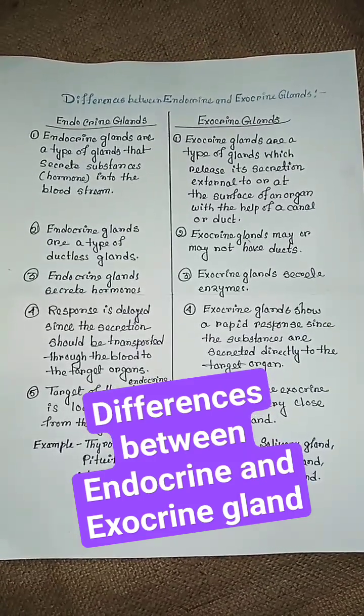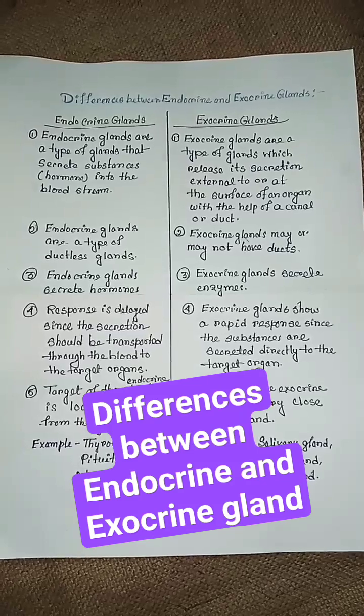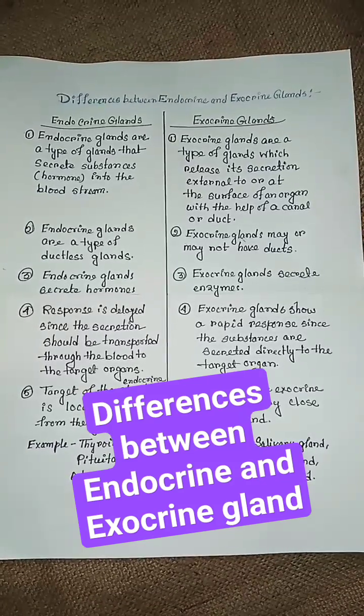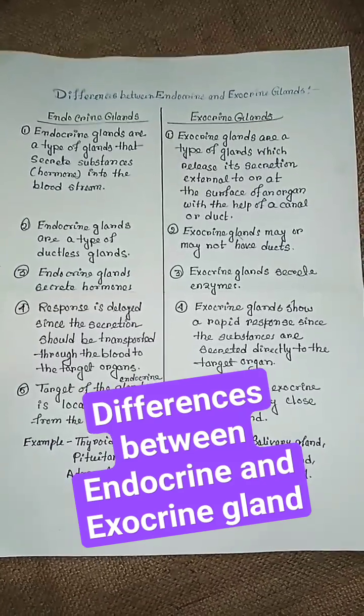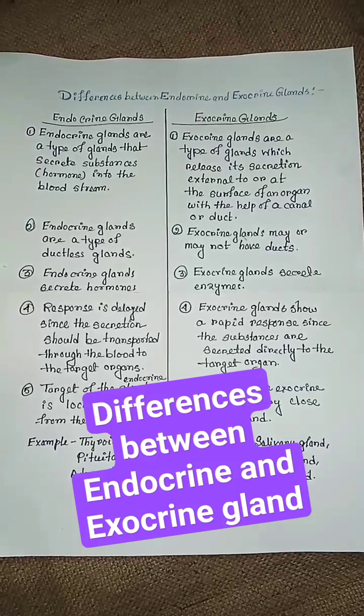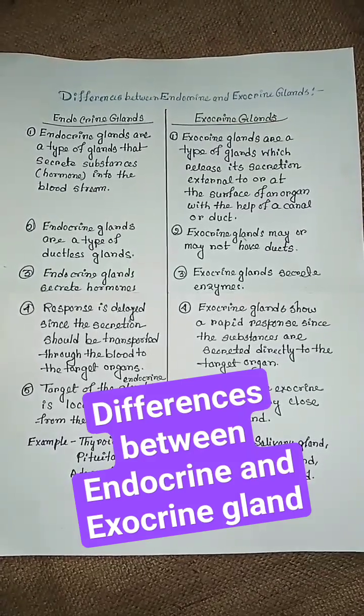Exocrine glands are a type of glands which release their secretion external to or at the surface of an organ with the help of a canal or duct.